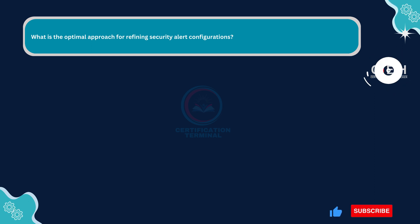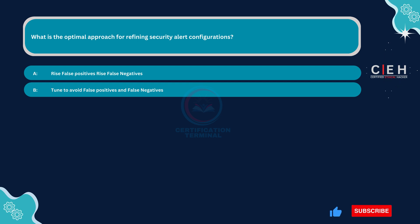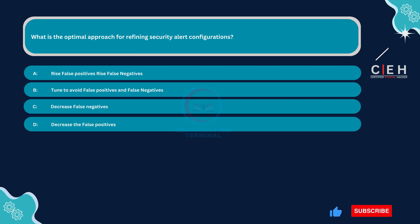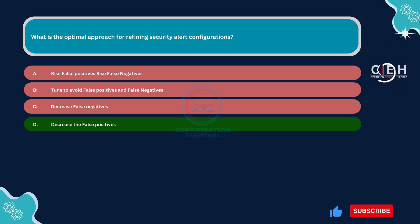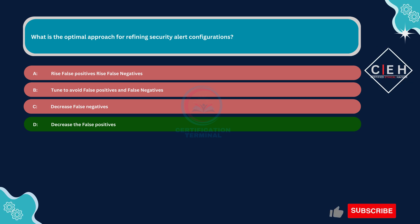Next question. What is the optimal approach for refining security alert configurations? Option A: rise false positives, rise false negatives. Option B: tune to avoid false positives and false negatives. Option C: decrease false negatives. Option D: decrease the false positives. The correct answer is Option D: decrease the false positives. In summary, optimizing a SIEM's threat detection coverage while minimizing false positive rates is a complex and ongoing process that requires a combination of technical expertise, data analysis, collaboration, and continuous improvement. By fine-tuning threat detection rules and striking the right balance between coverage and false positives, organizations can enhance their cybersecurity posture and better protect against evolving threats.